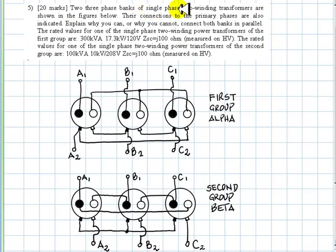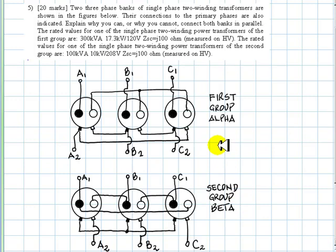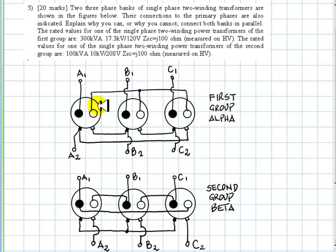Two three-phase banks of single-phase two-winding transformers are shown in the figure: Group Alpha and Group Beta. Their connections to the primary phases are also indicated. Explain why you can or cannot connect them both in parallel.